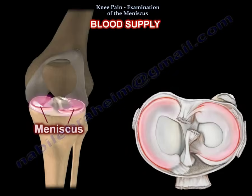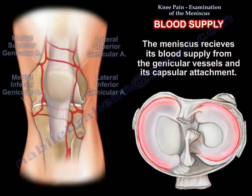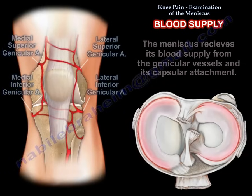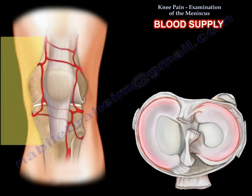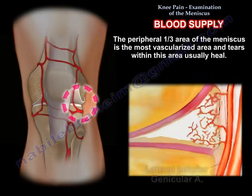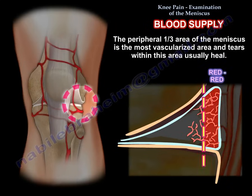Regarding blood supply of the meniscus: the meniscus receives its blood supply from the geniculate vessels and its capsular attachment. The peripheral one-third is the most vascularized part, called the red-red area. Tears in this area usually heal.